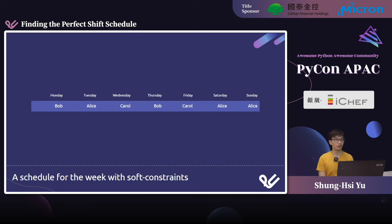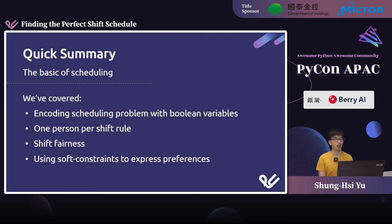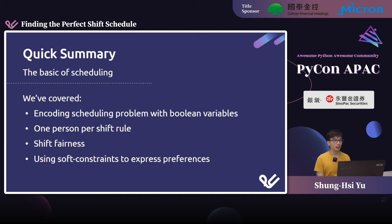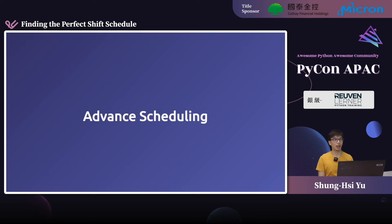So right now I believe I've covered most of the basic parts of scheduling. We've covered how to encode the scheduling problem with Boolean variables, how to write the one-person-per-shift rule, how to handle shift fairness so each person gets about the same number of shifts, and how to use soft constraints to express preferences. With that, you can build a very basic scheduling program already. Let's now move on to some advanced scheduling.